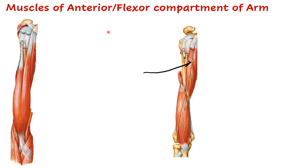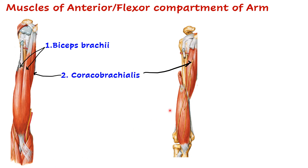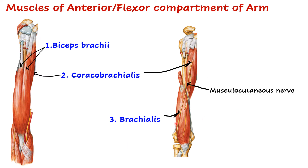Now coming to the muscles of the arm. We have two compartments: the flexor or anterior compartment and the extensor or posterior compartment. Muscles of the anterior flexor compartment — there are three muscles: biceps brachii with its long and short heads, coracobrachialis, and brachialis, which is in the lower part of the arm deep to the biceps brachii. All three muscles are supplied by the musculocutaneous nerve, which is a branch from the lateral cord of the brachial plexus.